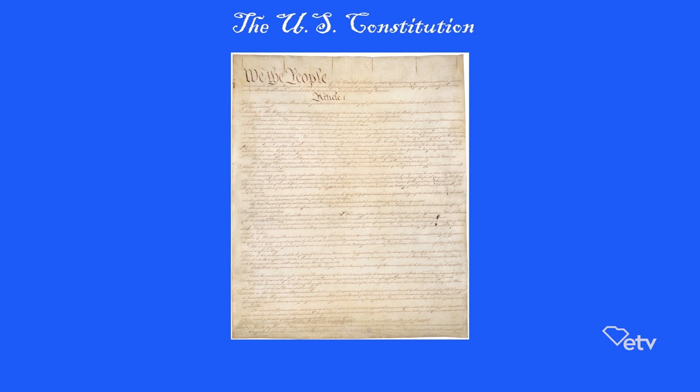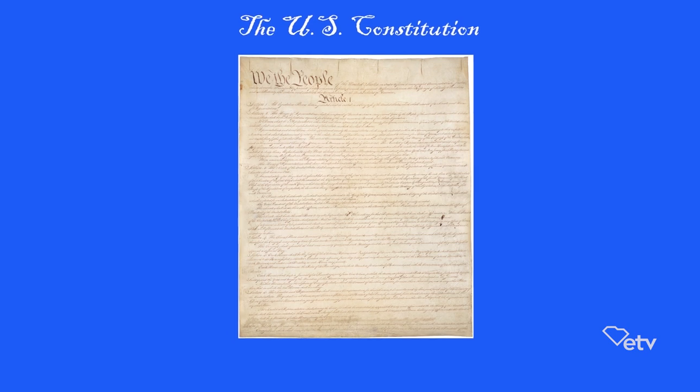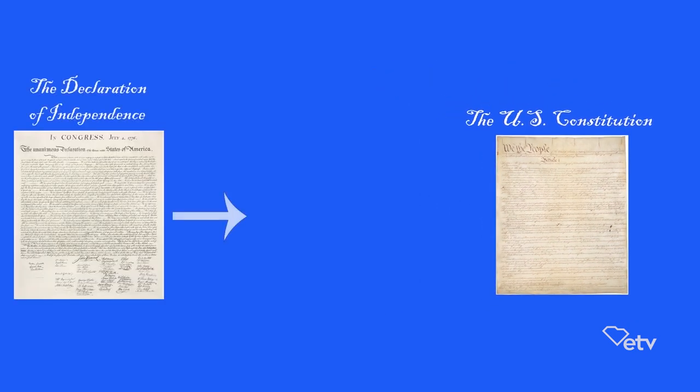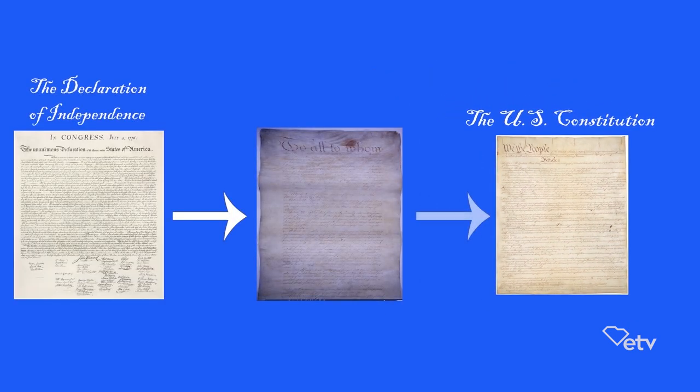Then begs the question: so we won the war — now what? In order to understand how the Constitution came to be, it's important to note the impacts of the previous documents leading up to its adoption: the Declaration of Independence and the Articles of Confederation.